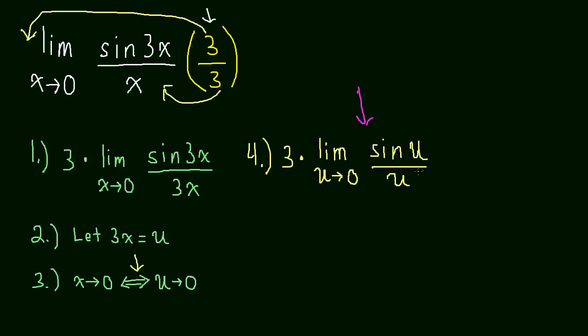So we get this is going to be equal to 3 times, and then the whole limit becomes 1, so it's 3 times 1, which is equal to 3. So this limit turns out to be equal to 3.